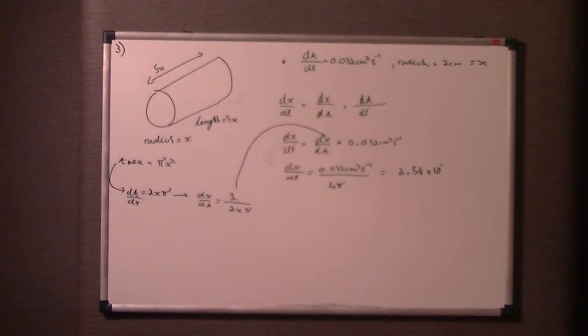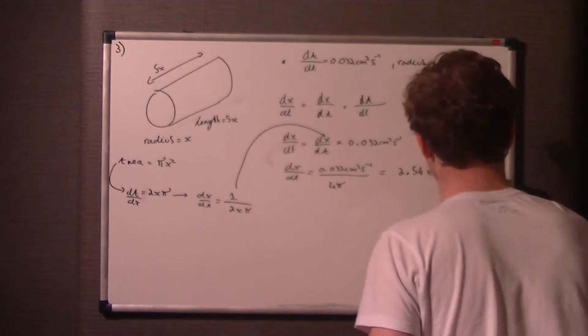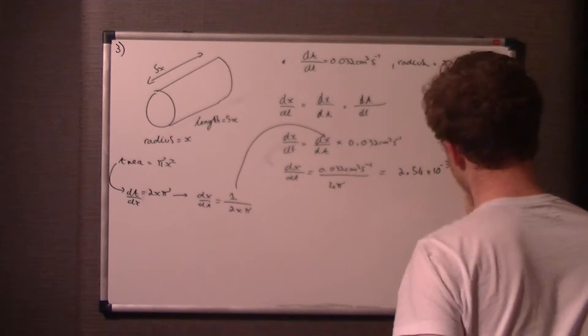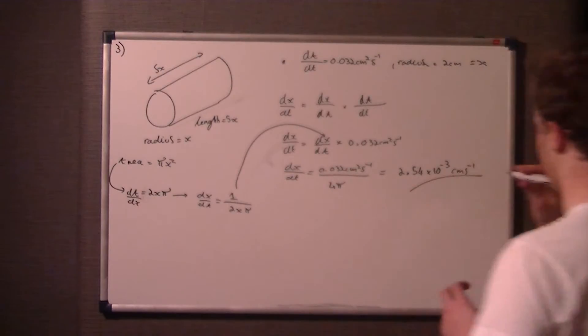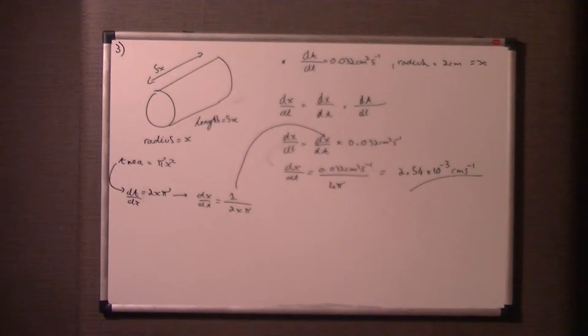I've got 2.54 times 10 to the—oh sorry, I do apologize. I think I'm fairly sure I put minus 2 there, but I just want to be absolutely sure, because I don't want to say something and then continue with it. Give me one second. No, it's times 10 to the minus 3, sorry. And that is centimeters per second. Because obviously we're measuring the rate of change of radius, x being centimeters. And we'll look at it in terms of the rate of change of radius with seconds.